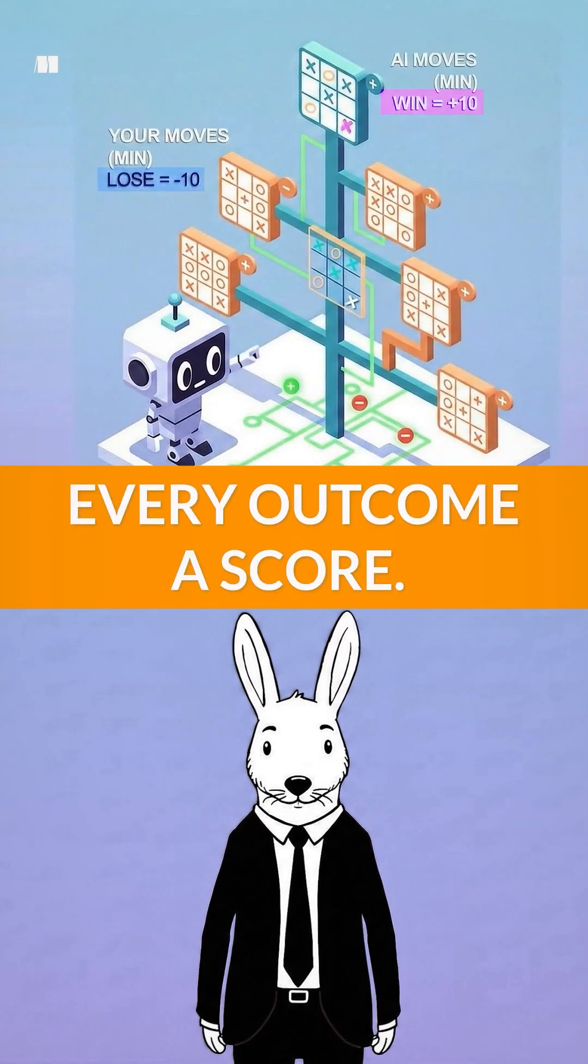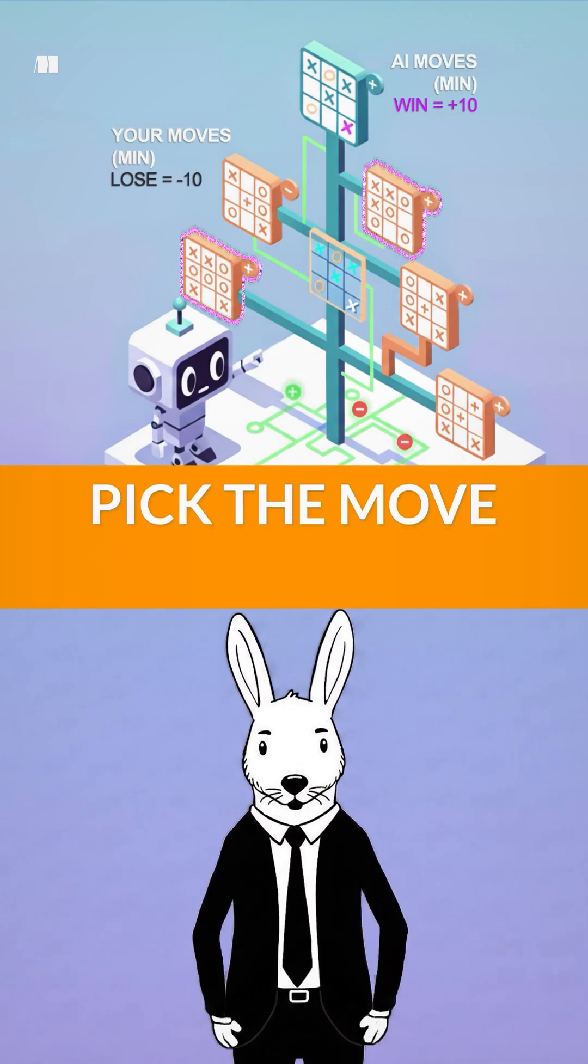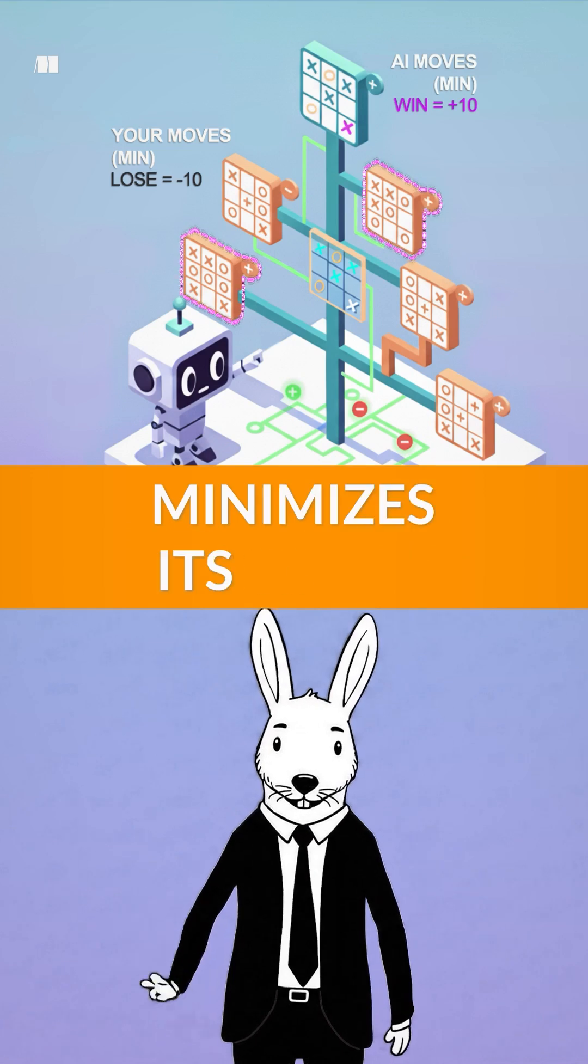The AI gives every outcome a score. Then, it works backward, assuming you will always pick the move that's worst for the AI, the one that minimizes its score.